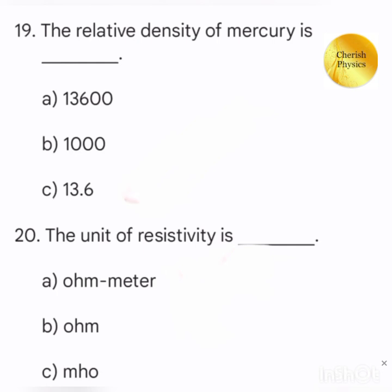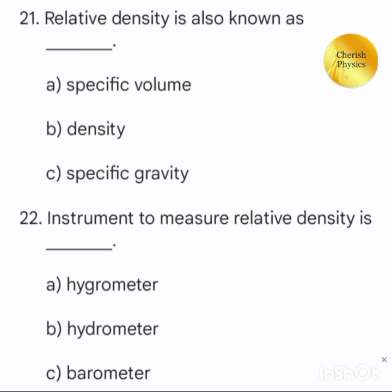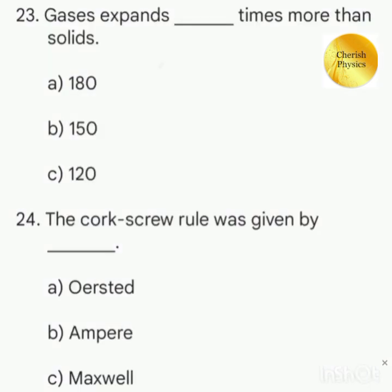The unit of resistivity is. It's also known as. Instrument to measure relative density is. Gases expands dash times more than solids. The corkscrew rule was given by.